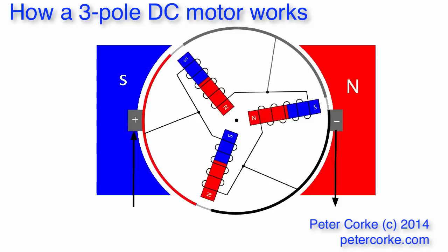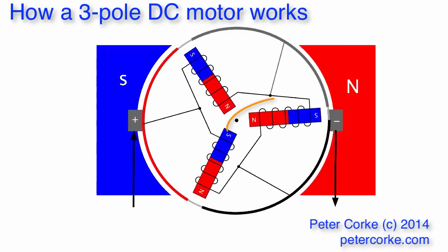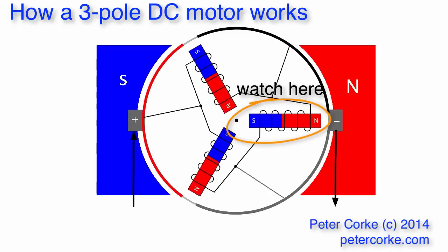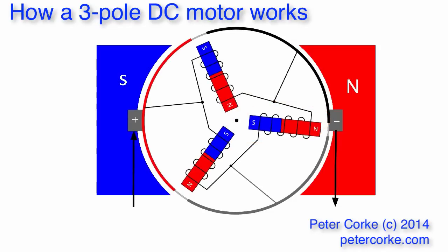So let's watch what happens during the commutation event in slow motion. What we notice as the brush moves from one segment to another is that the path that the current follows through the rotor and through the various electromagnets changes instantly. And that causes the polarity of one of the electromagnets to flip.